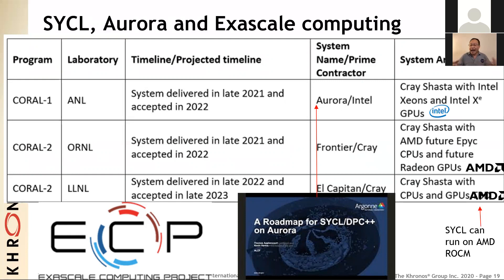There are actually two more coming — Frontier and El Capitan — and they will be delivered with AMD processors. Although no programming model has been decided yet, I will point out that SYCL can run on ROCm as one of our implementations, as hipSYCL has demonstrated to work on those processors.